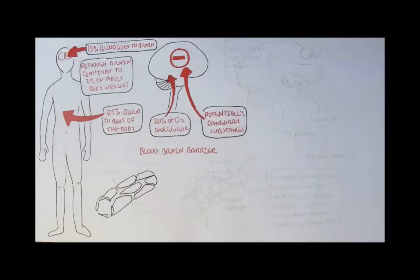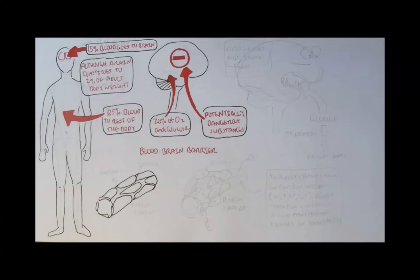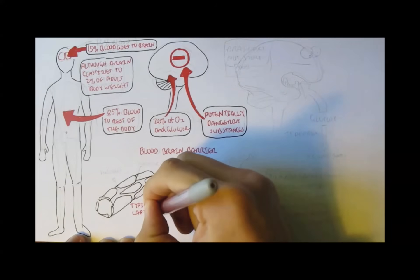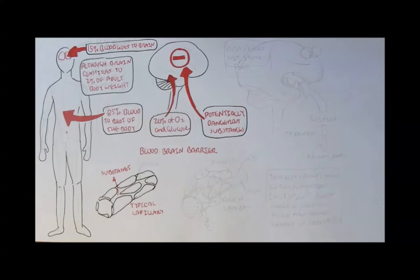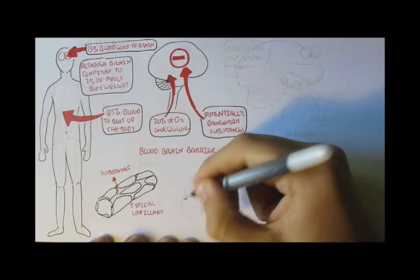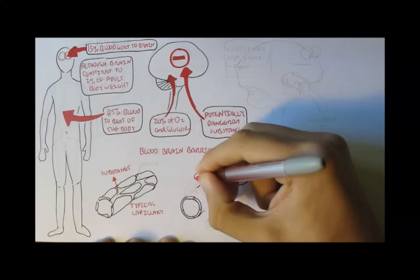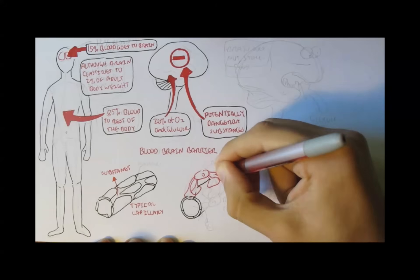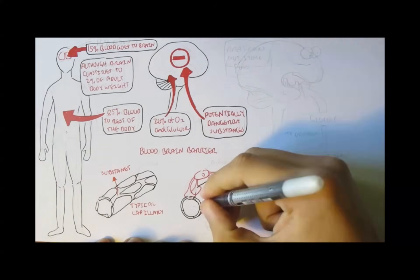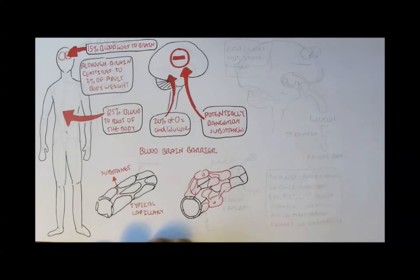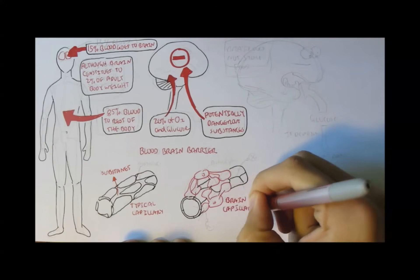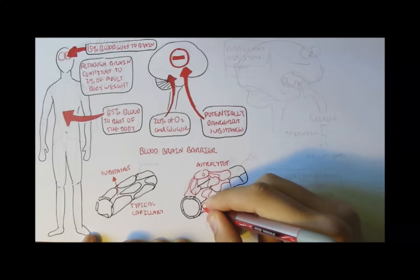A typical capillary looks something like this, where the cells surrounding the vessels are easily permeable to other substances, and so substances can move out quite easily. Brain capillaries, however, are tightly sealed, and also contain the neuroglial astrocytes, mentioned at the beginning of this video, which cover and coat the vessel, so no foreign material or unnecessary molecules can pass through.